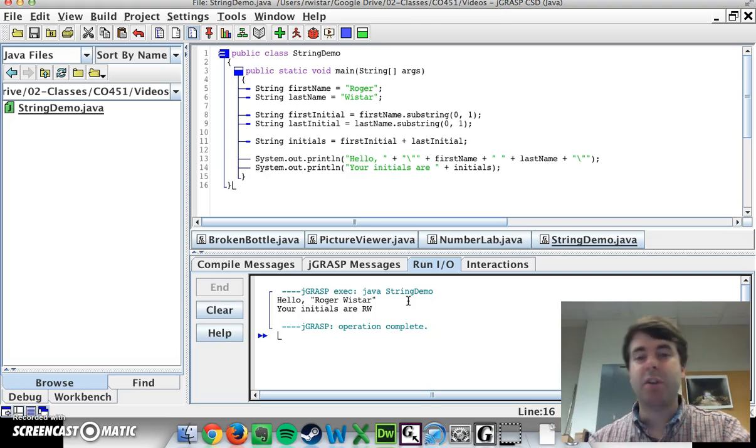So just to quickly recap, we talked about strings. They might act like primitives, but they're really objects. You can create and manipulate them using the standard syntax for creating variables. You can combine them together by using the plus sign. And if you need to put special characters inside them, you need to use something called an escape sequence. Alright, you're all set.